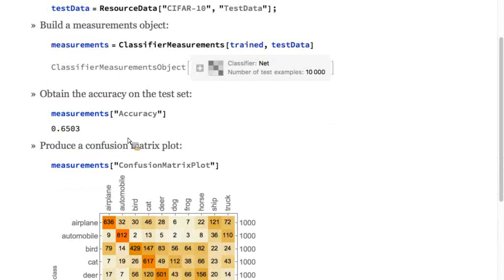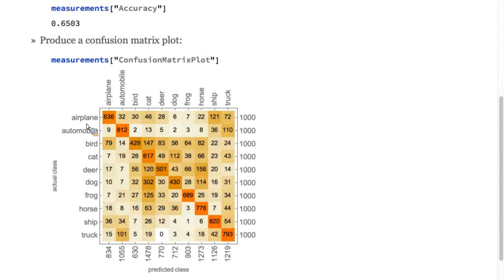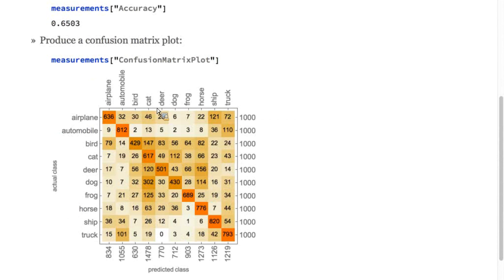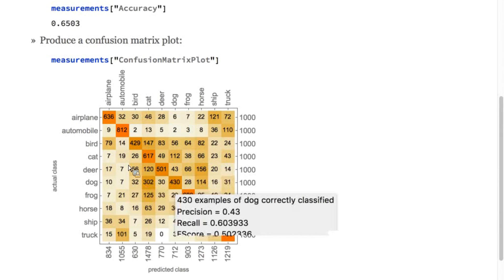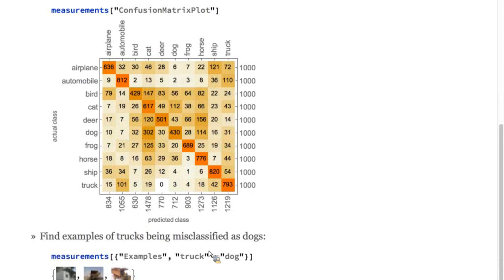You can see that the accuracy isn't particularly high. This is quite a simple net, but it's possible to get accuracy much higher than this. 65% of the examples were classified correctly. We can get a confusion matrix plot that lets us understand which classes are typically confused with other classes. The diagonal along this matrix tells you all the correct classifications, and then all off-diagonal things are misclassifications. And lastly, we can find particular misclassifications that we might find helpful to our intuition. Here's an example of all the trucks that are misclassified as dogs.